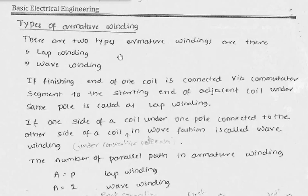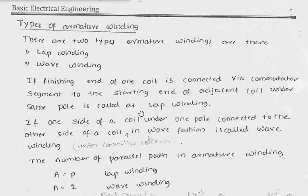To summarize: for wave winding, A equals 2; for lap winding, A equals P. This is very important to remember as it helps in solving problems. A simple memory trick — in the word LAP, the last letter is P, so A equals P for lap winding. If the finishing end of one coil is connected via a commutator segment to the starting end of the adjacent coil under the same pole, it is called lap winding.